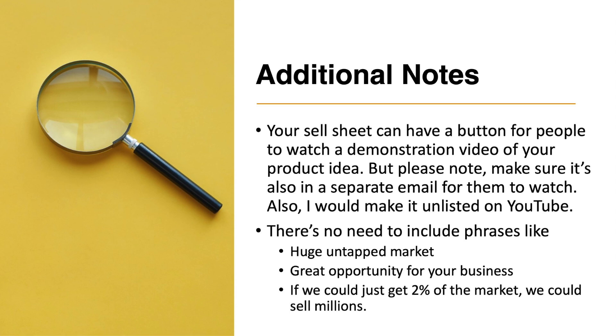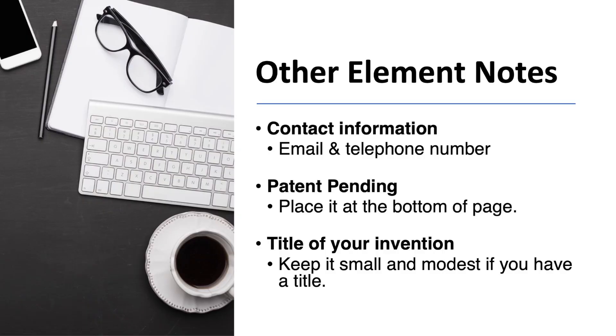There are a few phrases you do not want to put in your marketing material — such as 'if we only capture 2% of the market we're going to sell millions' or 'I've got a huge idea that's going to sell bazillions.' Don't put that type of information in there — it's a red flag that you don't know what you're doing. Also, make sure your contact information is at the bottom. If you have filed a provisional patent application, put 'patent pending' on there, but make it small. If you have not filed a PPA or non-provisional patent application, don't put 'patent pending' — it's against the law.